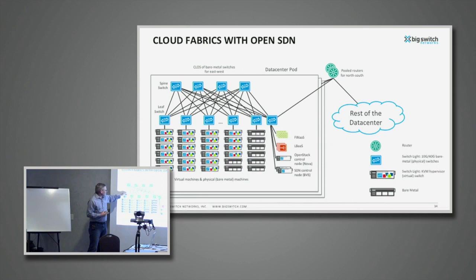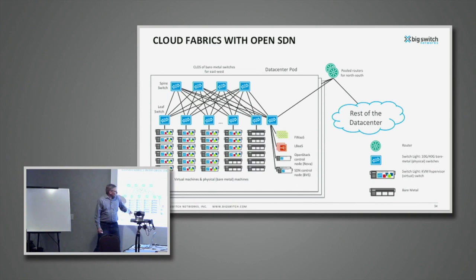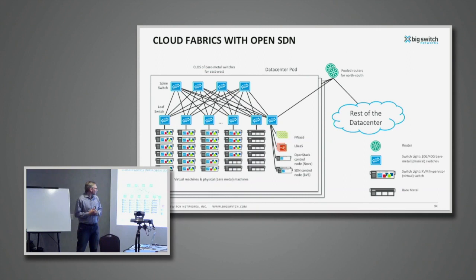Here's the overall solution. Imagine a data center with racks of servers, top-of-rack switches, in a leaf-spine architecture. Top-of-rack and spine switches are bare-metal with SwitchLite — there's a compatibility list. We have hypervisor switches on virtualized hosts: SwitchLite for Linux. You can also plug in bare-metal servers — some customers don't like virtualizing database servers for performance reasons. And you can plug in services like a physical firewall or load balancer directly into this fabric, and stitch them into the overall solution.